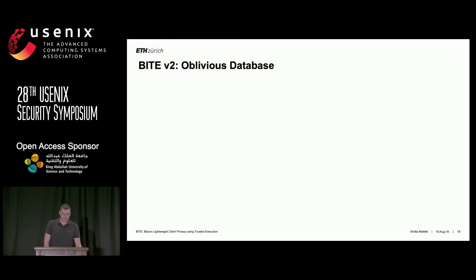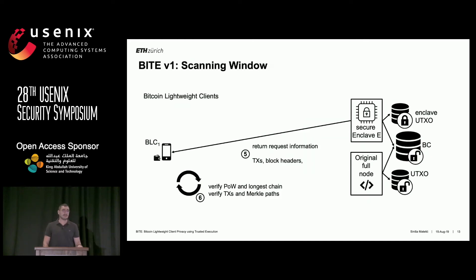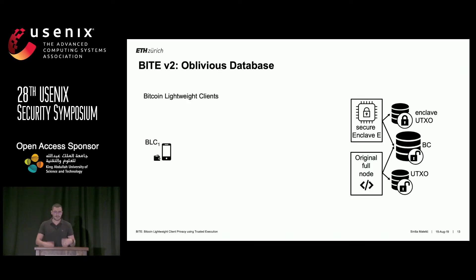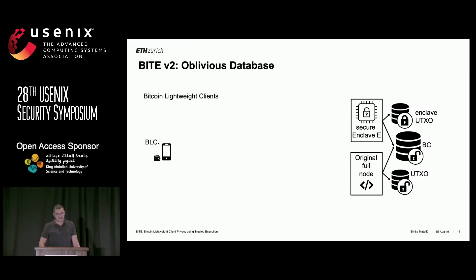The scanning window protects only against external leakage, not internal leakage. To tackle internal leakage as well, we have a different variant called oblivious database. This is a completely new verification mode that doesn't share the same properties as SPV. In this variant, the enclave on the full node maintains a specifically crafted version of the unspent transaction outputs, which is encrypted, indexed, and accessed using ORAM.